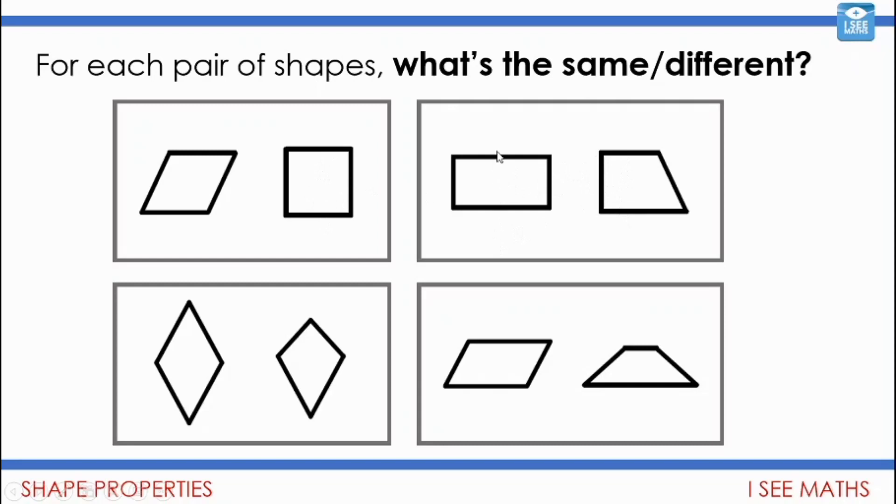I've got a trapezium and a rectangle. The same? Well they've both got at least one pair of parallel lines and they've got four sides of course. And what's different? Well the rectangle's got two pairs of parallel sides as opposed to the trapezium. Here we've got a kite and we've got a diamond here. The diamond I could describe as a rhombus as well.